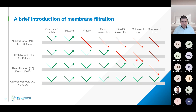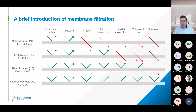Reverse osmosis is the tightest membrane type, most commonly used in seawater desalination but applicable to landfill leachate as well. It removes monovalent ions, enabling salinity reduction from levels reaching 65–70 g/L. Reverse osmosis can also remove the smallest endocrine disruptors, whose effects on all forms of life can be severe and which require careful attention in environmental regulations.